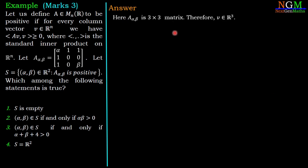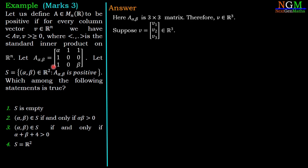A(α,β) is a 3×3 matrix, therefore Av is possible only if v belongs to R³. We consider v = (v₁, v₂, v₃) in R³. We need to find the values of α and β such that A(α,β) is positive, meaning the inner product ⟨A(α,β)v, v⟩ is always greater than or equal to zero.